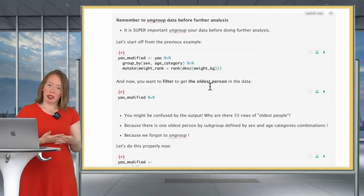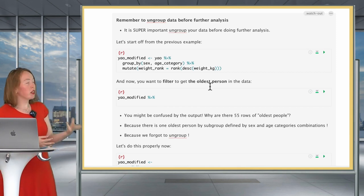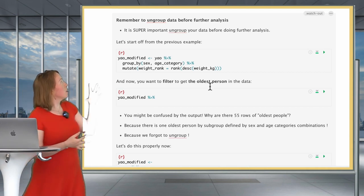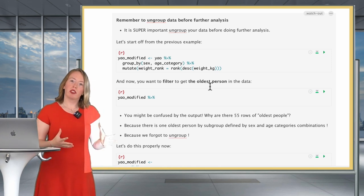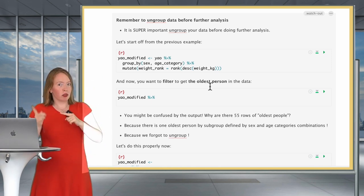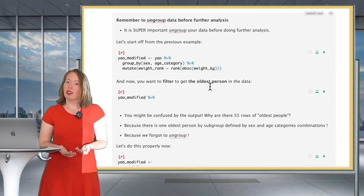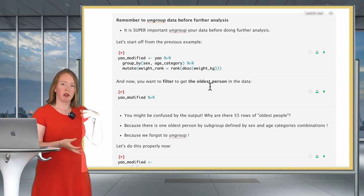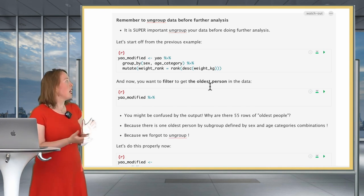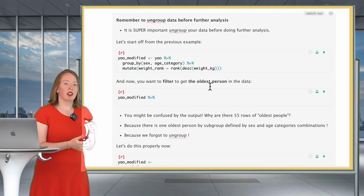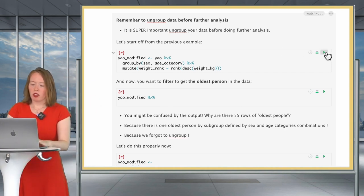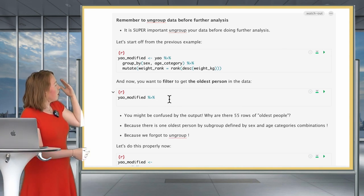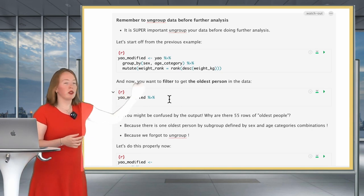We're going to take this last mini bit of the lesson to highlight the importance of ungrouping your data once you are done data wrangling over groups. So as written here in capital letters, it's super important when you do a group_by operation to then think ungroup once you're done. We're going to illustrate this with the example we just saw, where we created groups defined by the gender and age category of individuals and all the different combinations possible, and then created a ranking variable for each of these different groups. So let's run this code chunk to get our YOW modified. And now imagine that on this data set that we have kept, we want to filter to get the oldest person in the data.